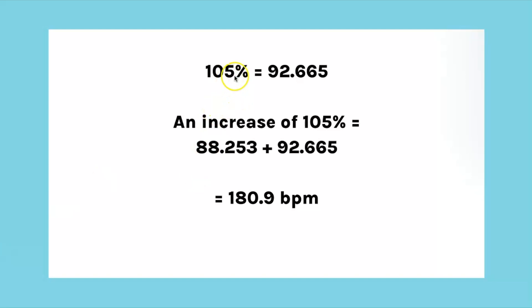So now we know that 105% equals 92.665. Because we have to calculate an increase of 105%, we need to add that on to the original heart rate, so the new heart rate is 180.9 beats per minute.